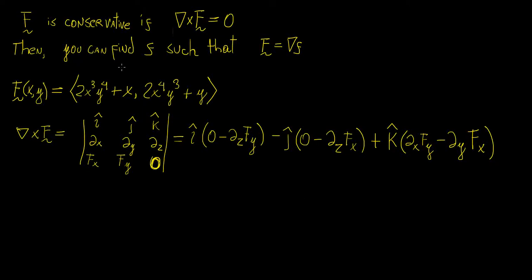Now that we saw how to calculate the curl of a vector field, it's important to start talking about when a vector field is conservative. A vector field F is conservative whenever its curl is equal to zero, meaning every single element of the resultant vector field is zero. The significance of this is that if the vector field is conservative, we can always find a scalar field f such that the gradient of that scalar function is exactly equal to that vector field.